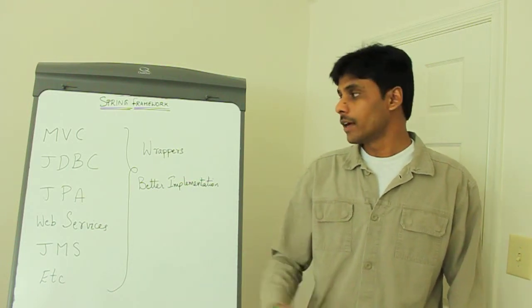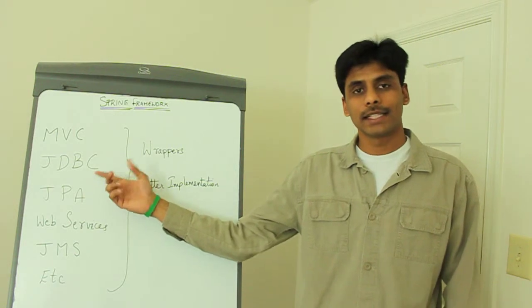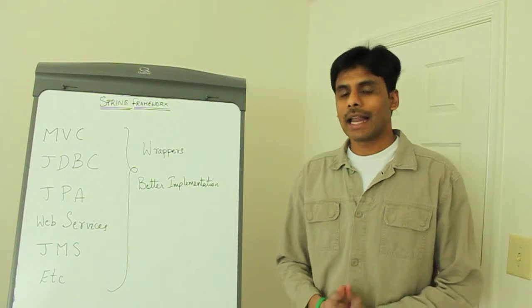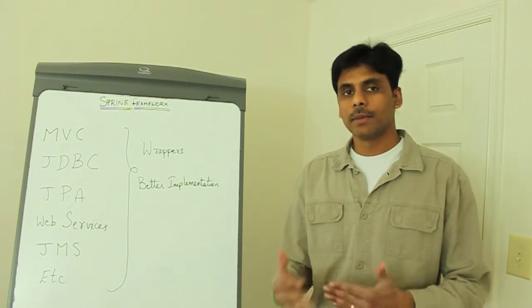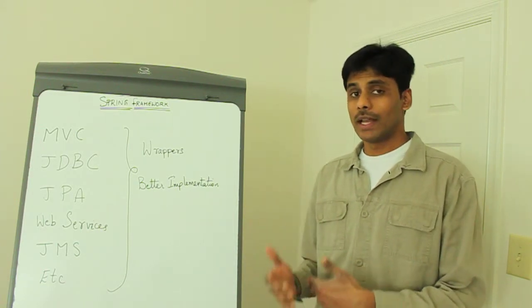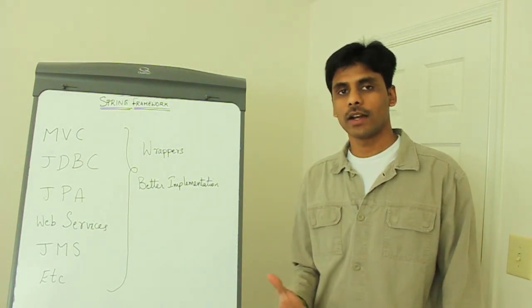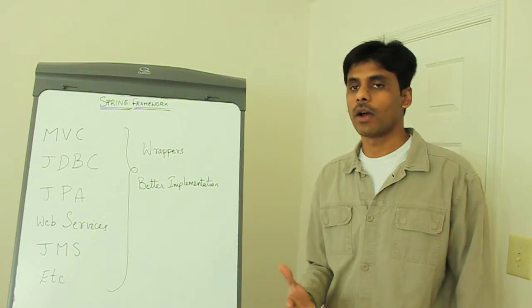A good example would be the JDBC API, the Java Database Connectivity API. Spring provides several JDBC template classes which wrap the JDBC API, and when you inject these JDBC template classes into your data access layer, like your DAOs, data access objects.